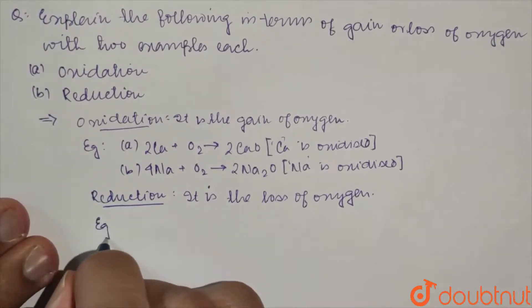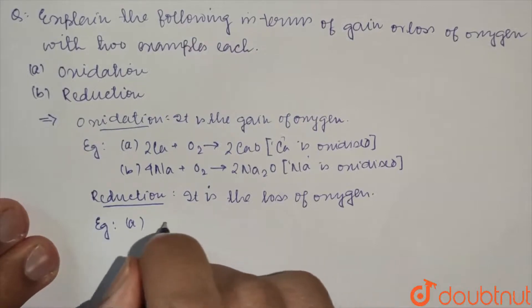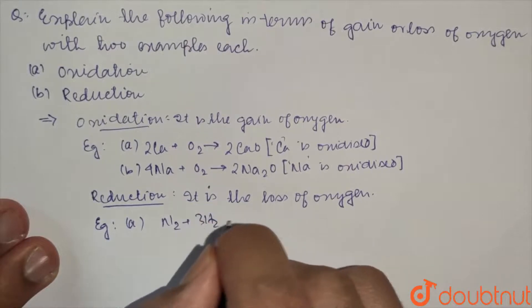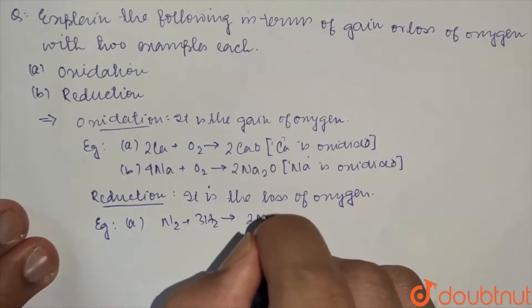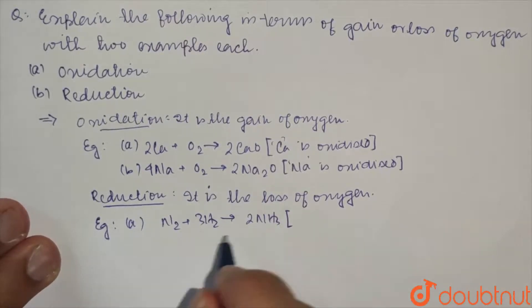Now we need two examples. The first can be production of ammonia. Here the nitrogen is reduced.